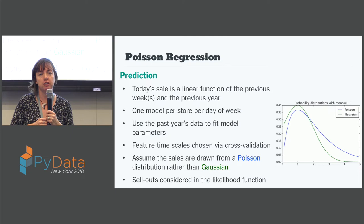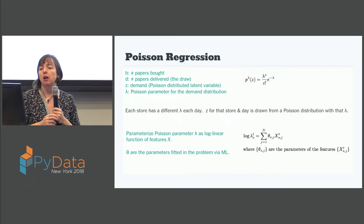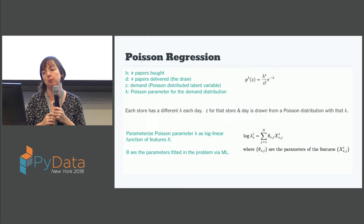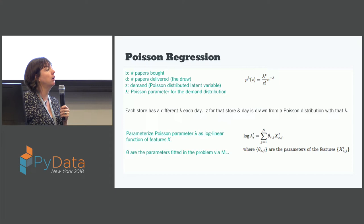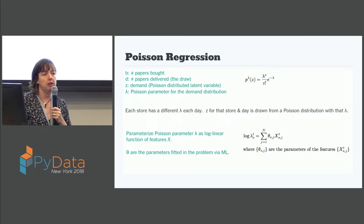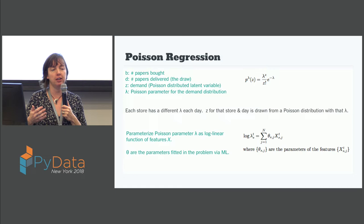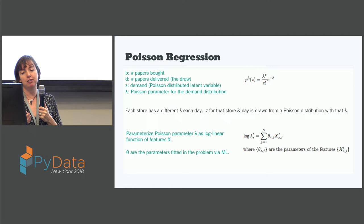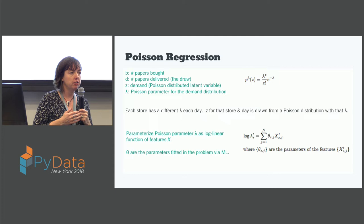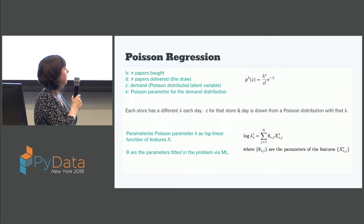The other improvement compared to the AR model is that we are now considering sellouts as part of the likelihood function in the minimization. The equation on the top is just the definition of the Poisson probability distribution. Lambda is the Poisson parameter, which tells you the expected sales. Z is the demand that actually happens in the store for newspapers — Z is the Poisson-distributed latent variable described by the Poisson parameter lambda, which is what we're trying to figure out here.